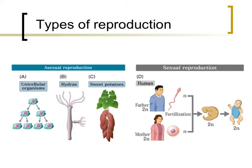There are two main classifications of cellular reproduction: asexual reproduction and sexual reproduction. The picture on this slide exhibits some examples of these types of reproduction involving different types of cells. Over the next few slides, these forms of reproduction will be compared and contrasted.